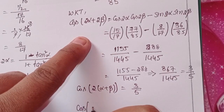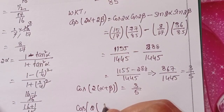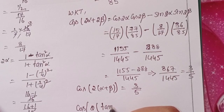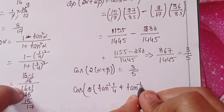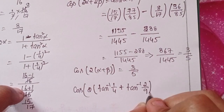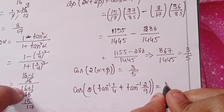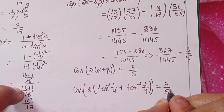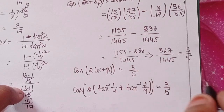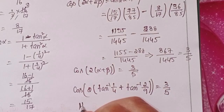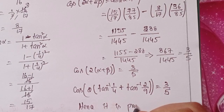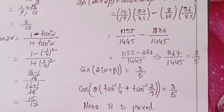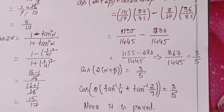Therefore, cos of 2 times alpha plus beta equals 3 by 5, meaning cos of 2 times tan inverse (1/4) plus tan inverse (2/9) equals 3 by 5. This is RHS. Hence it is proved. This completes question number 3.